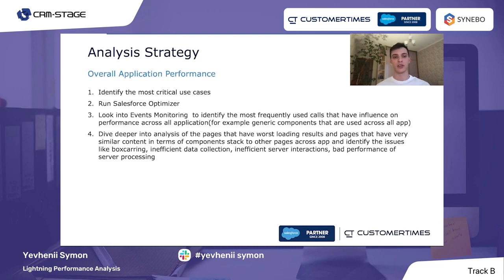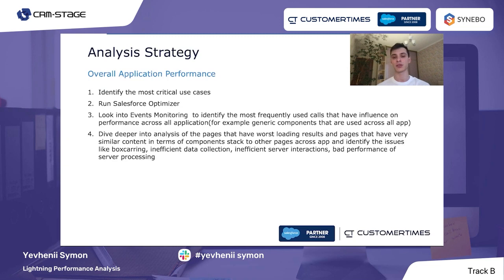Let's talk about analysis strategy for overall application performance. First, identify the most critical use cases using the Lightning Usage App. Then run the Salesforce Optimizer to get weak areas and guidance on how to address them. Look into Event Monitoring to identify the most frequently used calls that influence performance across applications. Then dive deeper into analysis of pages with the worst loading results and pages with similar component stacks to identify issues like box carrying, inefficient data collection, inefficient server interactions, and bad server processing performance.